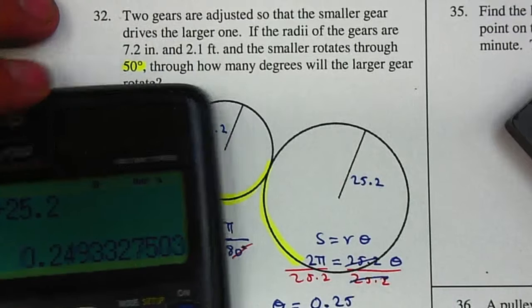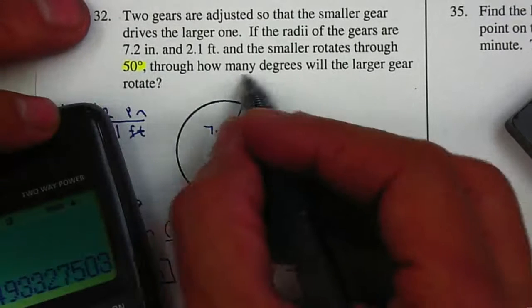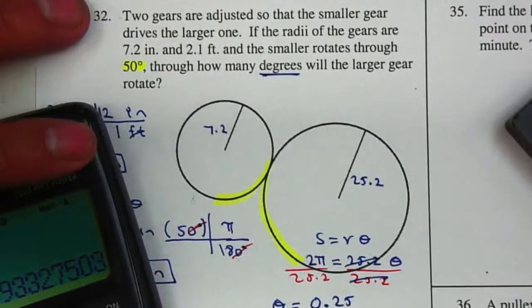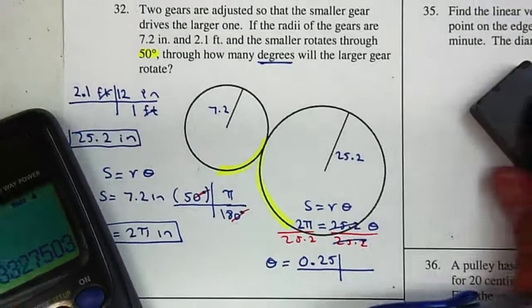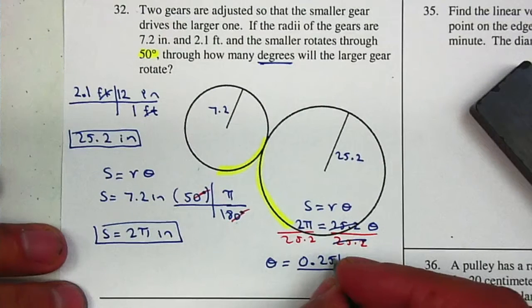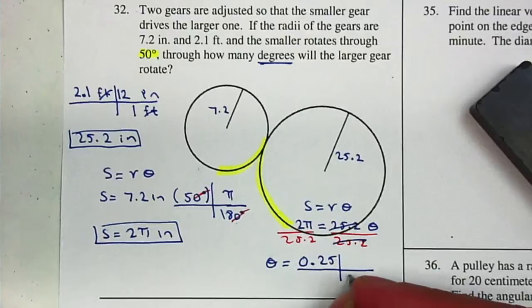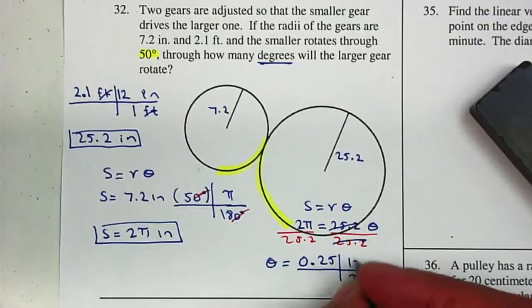Now I want to change this into degrees because this is in radians. So I'm going to make my conversion chart. My radians are on top, so I'm going to place my radians on the bottom, and that's equal to 180 degrees.